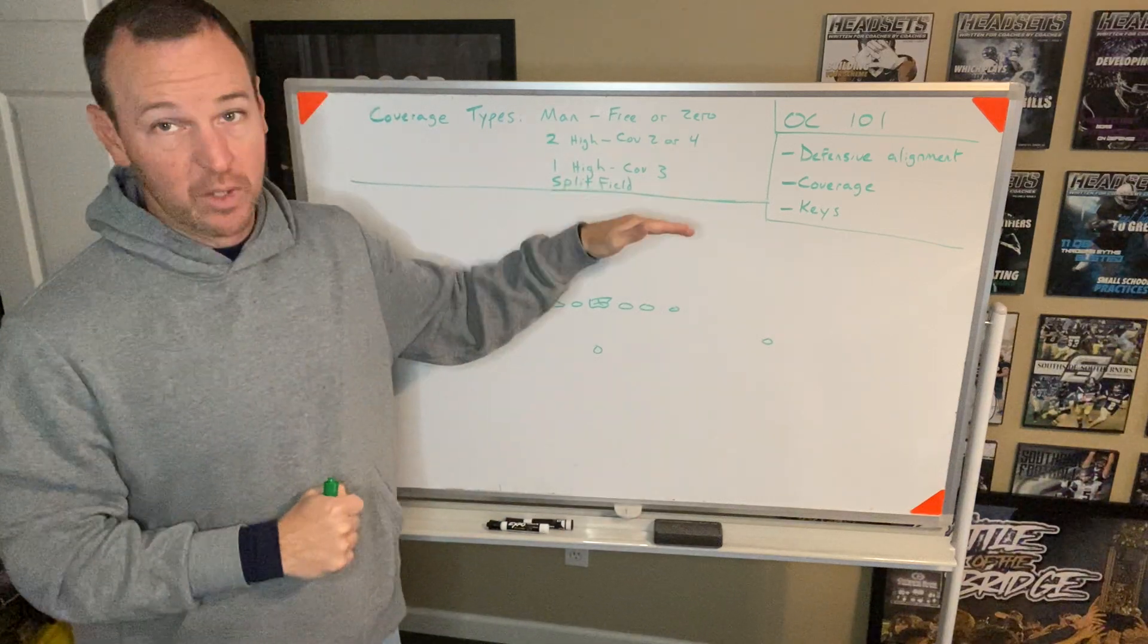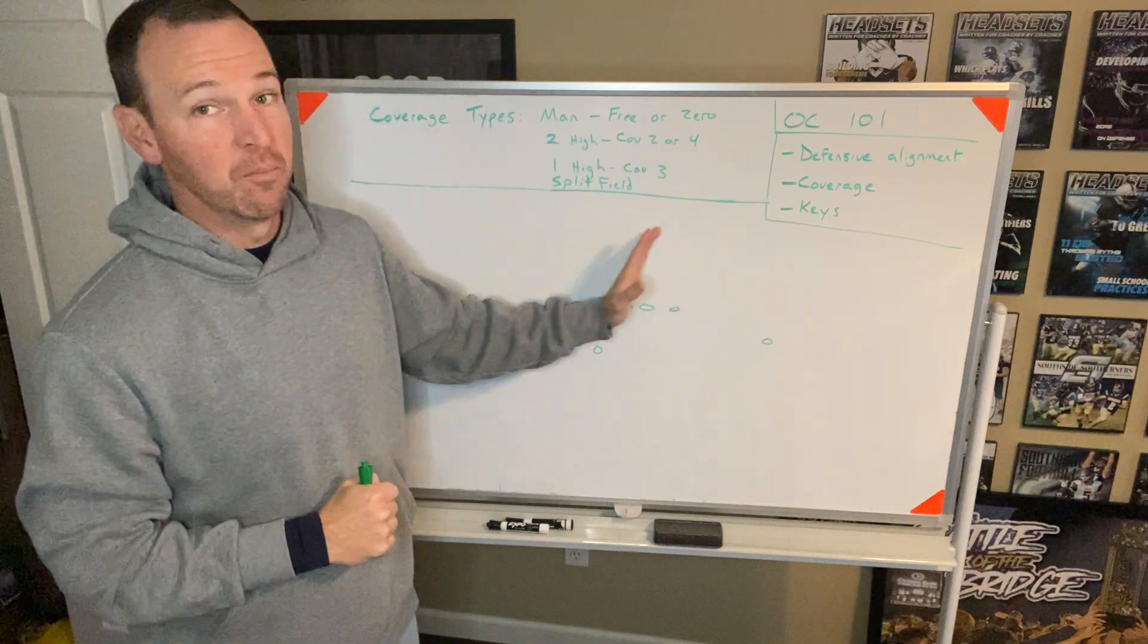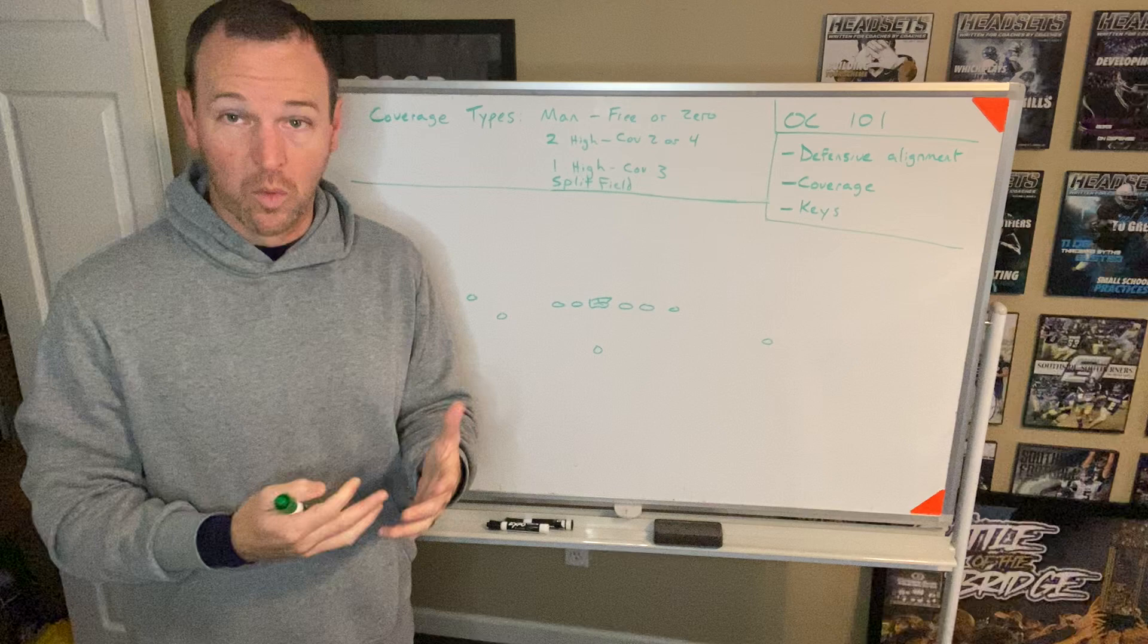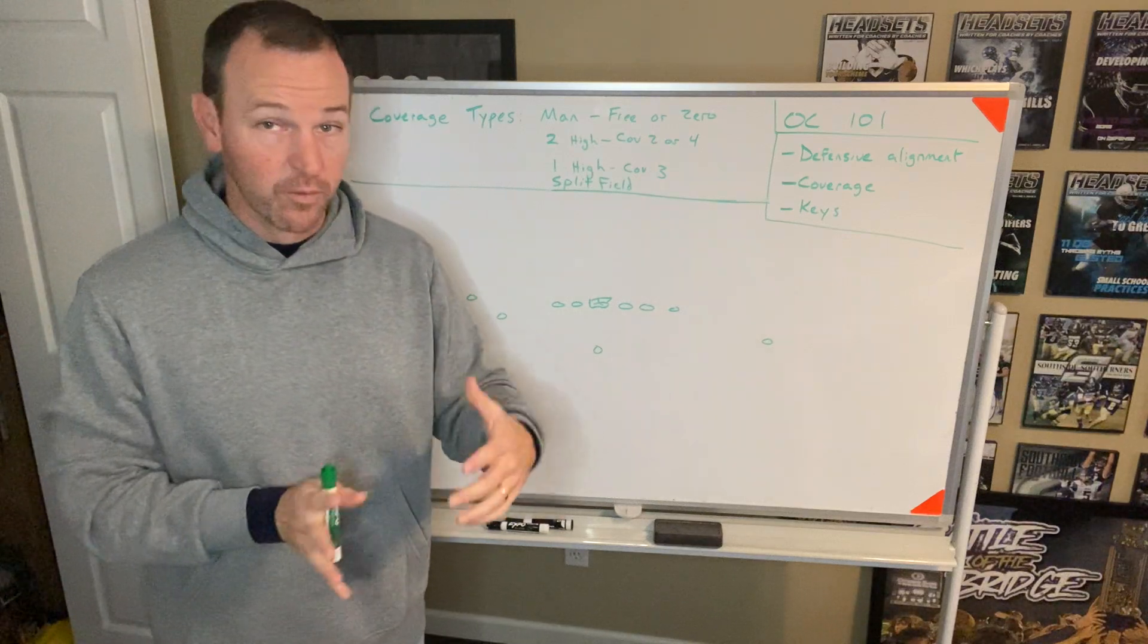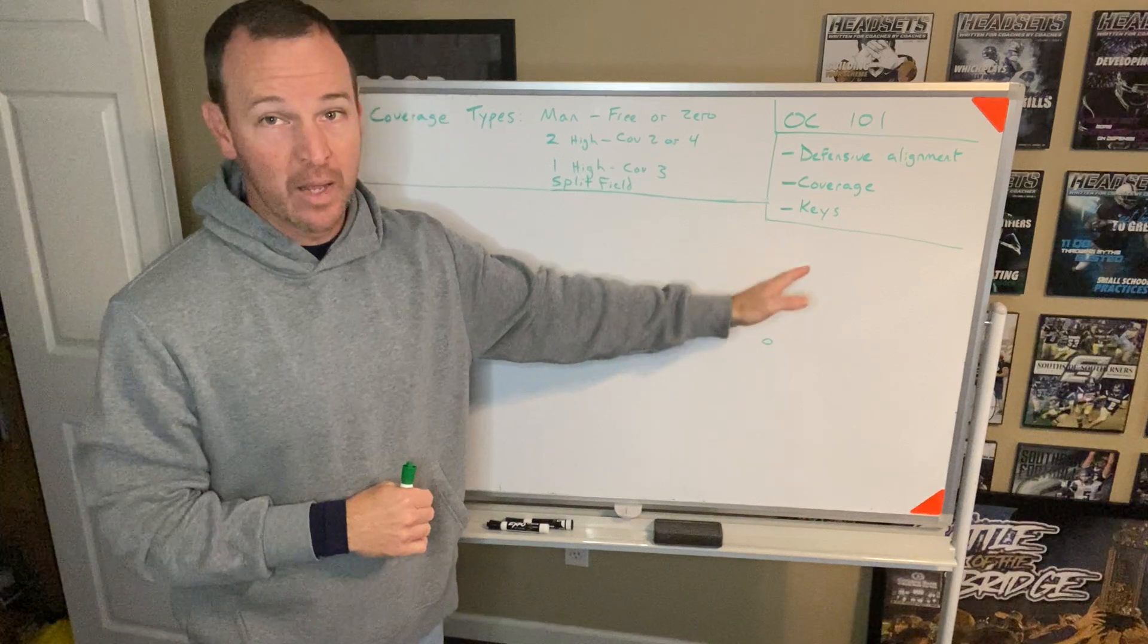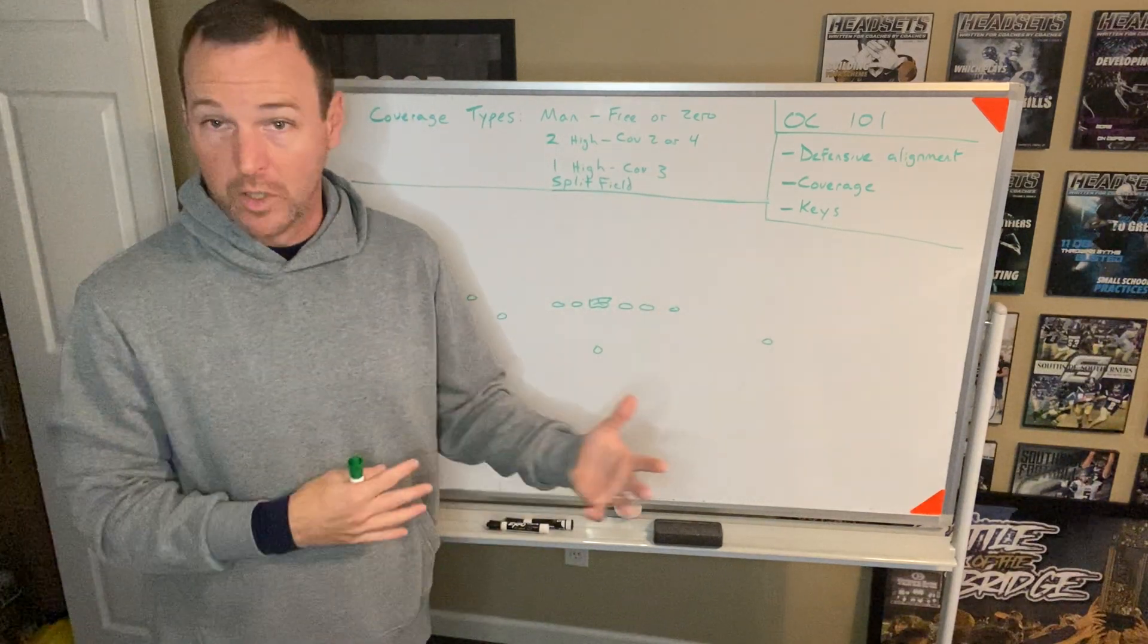And then you have split field coverages. So you'll see this a lot where maybe half the field is in man and half the field is in zone. If you run flavors of trips where you have one receiver over here and he's clearly in man, but they're running zone on the other side, that means they're a split field coverage team.